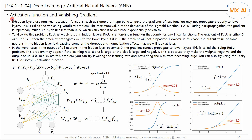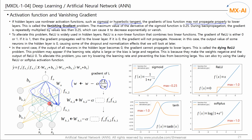Next, let's look at the activation function and vanishing gradient problem. If hidden layers use non-linear activation functions such as sigmoid or hyperbolic tangent, the gradients of the loss function may not propagate properly to lower layers. This is called the vanishing gradient problem. There are two hidden layers, and each parameter is updated using the gradient descent method. By backpropagation, the loss in the output layer is propagated to the hidden layer. We'll cover this in more detail later in the backpropagation part — for now, let's get a general understanding of the vanishing gradient problem.